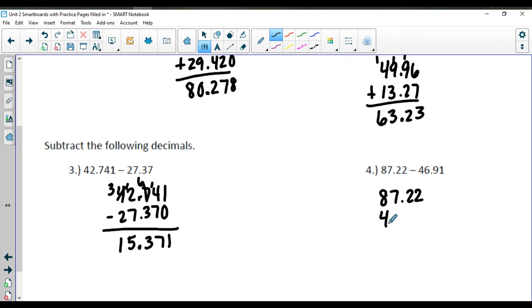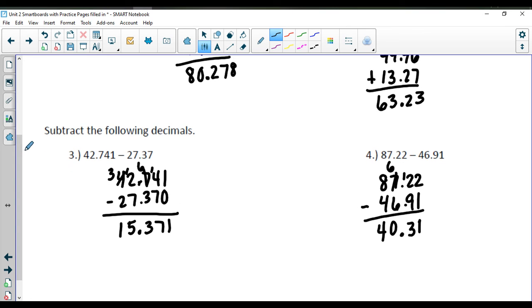87.22 minus 46.91. 2 minus 1 is 1. 2 minus 9 we can't do, so we have to borrow. 12 minus 9 is a 3. Bring down your decimal point. 6 minus 6 is 0. And 8 minus 4 is 4. So we have 40.31 on that last one.